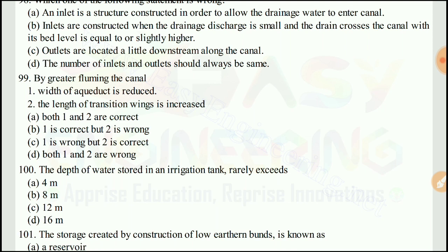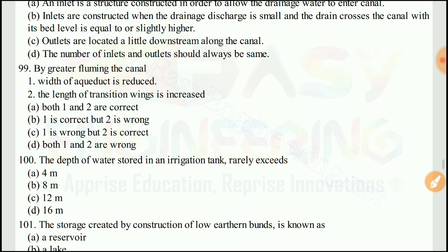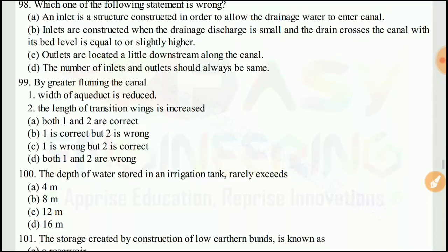Question 98: By lining the canal, the right answer would be A, both statements are correct: the width of the aqueduct is reduced and the length of the transition is increased — both are correct.